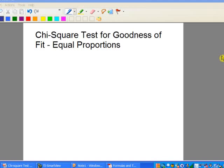In this StatCast, we want to take a look at the chi-square distribution, in particular, the test for goodness of fit, where we have equal proportions involved.